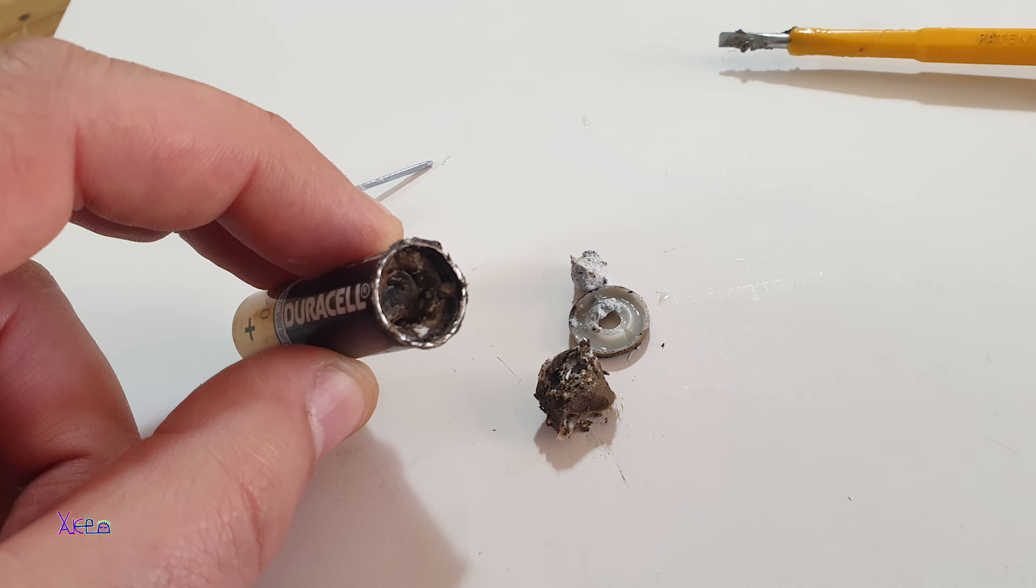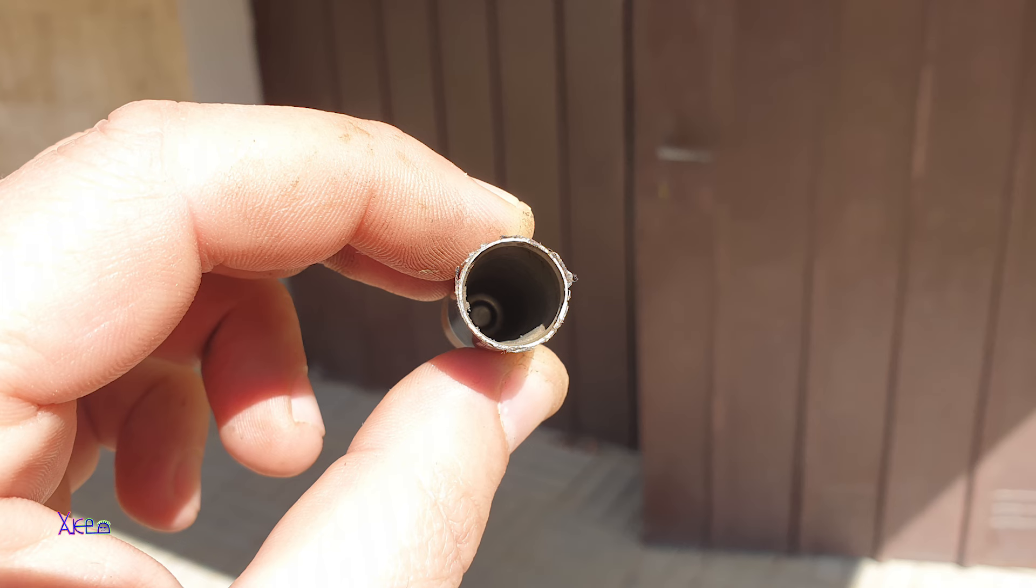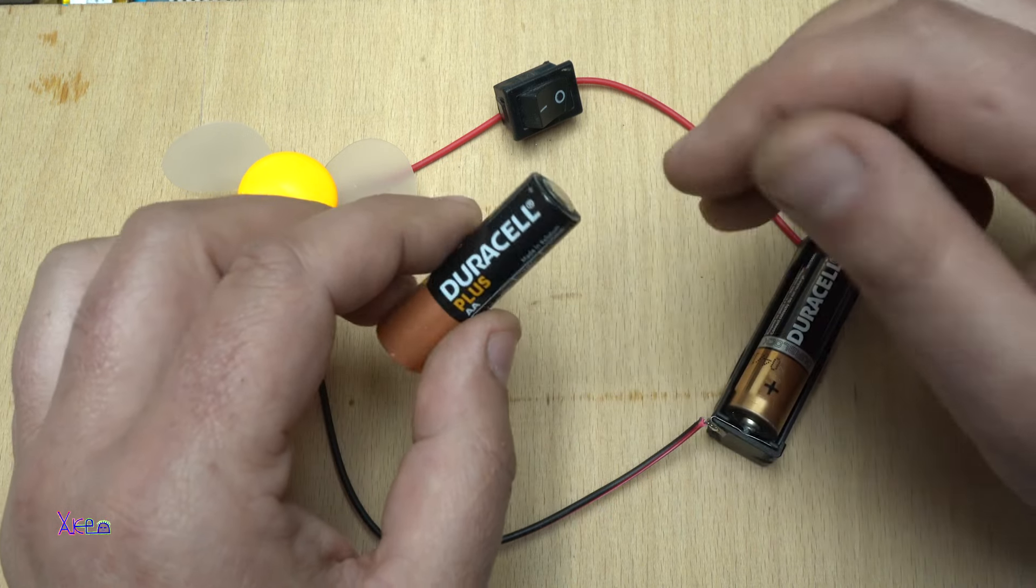I started with cutting the bottom part of the battery and removing all the chemical materials inside the battery to be clean so I can proceed to the next step.